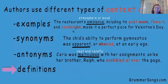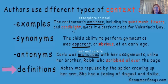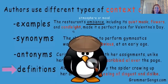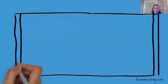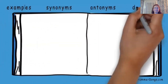Sometimes authors actually provide definitions within the text if using a less common word. Abby was repulsed by the spider crawling up her arm — she had a feeling of disgust and dislike. If you are unfamiliar with the word repulsed, the author clearly defines it as a feeling of disgust and dislike. Remember, context clues can be examples, synonyms, antonyms, or definitions.